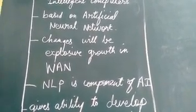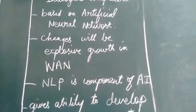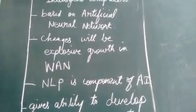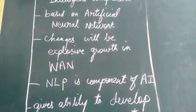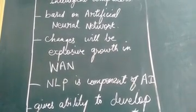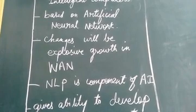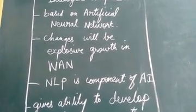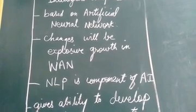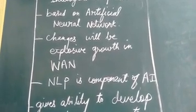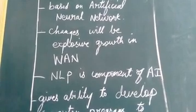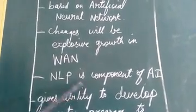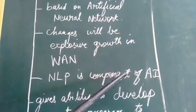Fifth generation computer: period 1982 till now, component — ULSI, that is ultra-large scale integration. Sixth generation: period is in the future. Its component includes AI — that is artificial intelligence — and NLP, which is natural language processing, as the component of AI used in sixth generation computing.